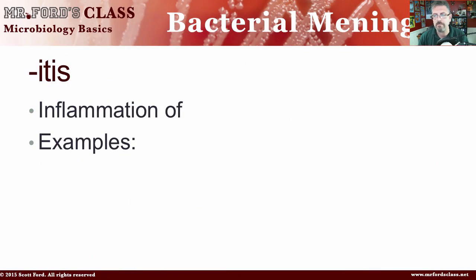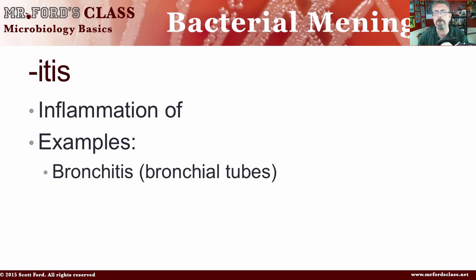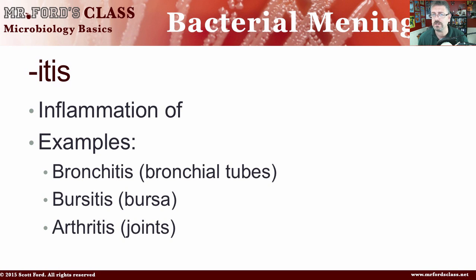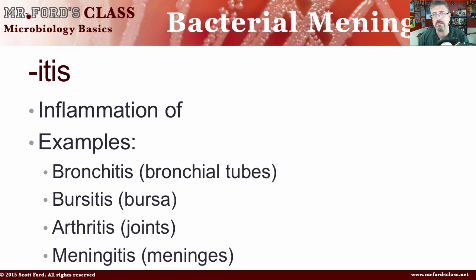First, let's understand what '-itis' means, because we're talking about meningitis. Itis means inflammation of. So anytime you see '-itis' at the end of a word, it means something's inflamed. For example, bronchitis means inflammation of the bronchial tubes. Bursitis is inflammation of the bursas — a little fluid-filled sac. Arthritis is an inflammation of the joints. And of course, what we're talking about in this video is meningitis — inflammation of the meninges.